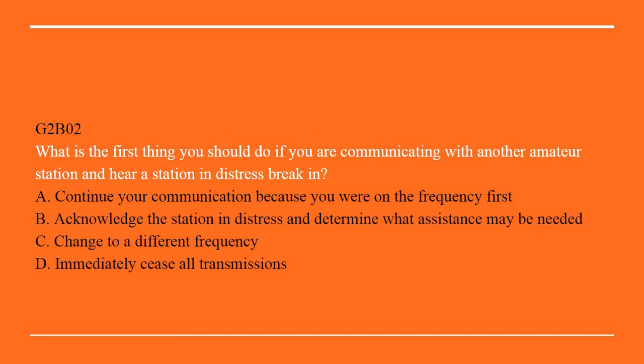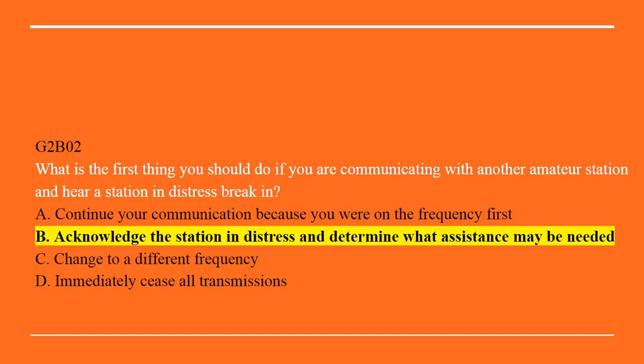G2B02: What is the first thing you should do if you are communicating with another amateur station and hear a station in distress break in? A. Continue your communication because you were on the frequency first. B. Acknowledge the station in distress and determine what assistance may be needed. C. Change to a different frequency. Or D. Immediately cease all transmissions. Correct answer here is B: Acknowledge the station in distress and determine what assistance may be needed.